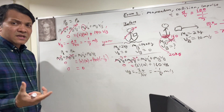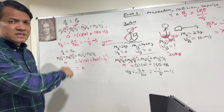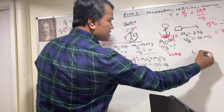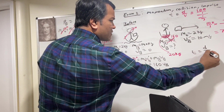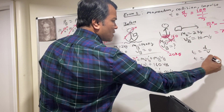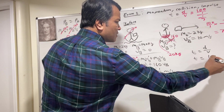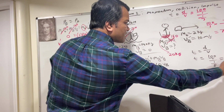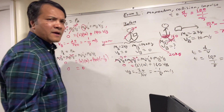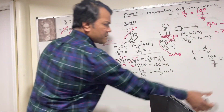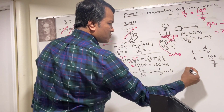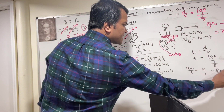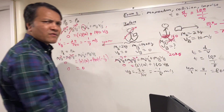Now it's going to take longer — not 700 seconds. Time equals distance over velocity: 100 divided by (1/8) equals 100 × 8 = 800 seconds. Before it took 700 seconds; now it takes 800 seconds because the velocity decreased since the boat is heavier.